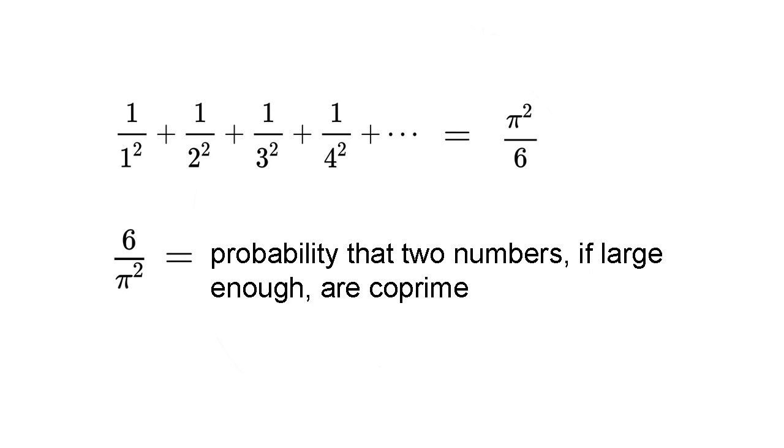You can check out what this is in the video on the Riemann hypothesis, elsewhere on this channel. Why should a number, that in the first instance we meet as a basic property of circles, suddenly re-emerge in connection with prime numbers?